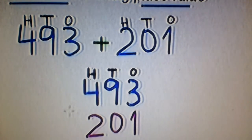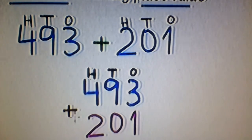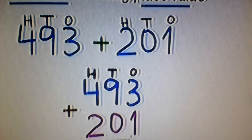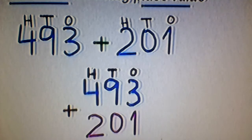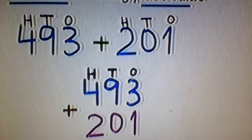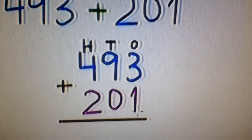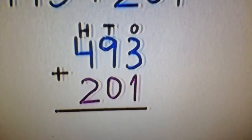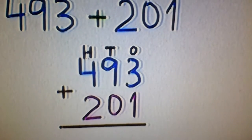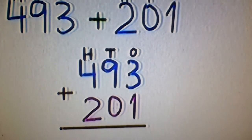So what are we going to do? We are going to add a plus here and we are going to add a plus. First, we are going to add one's digits. Then we have ten's digits and then we have hundred's digits.